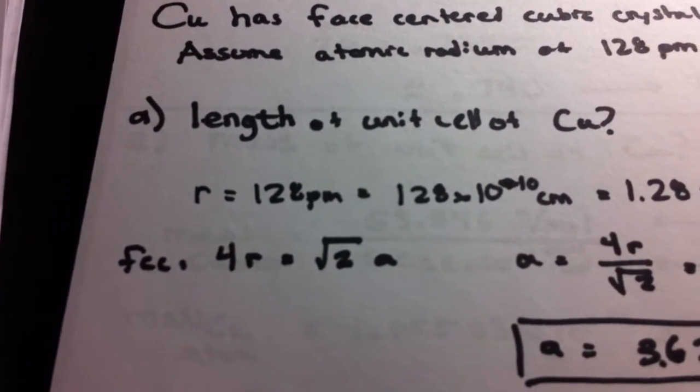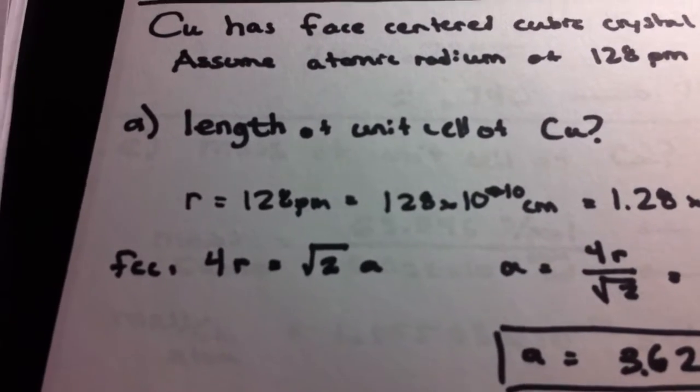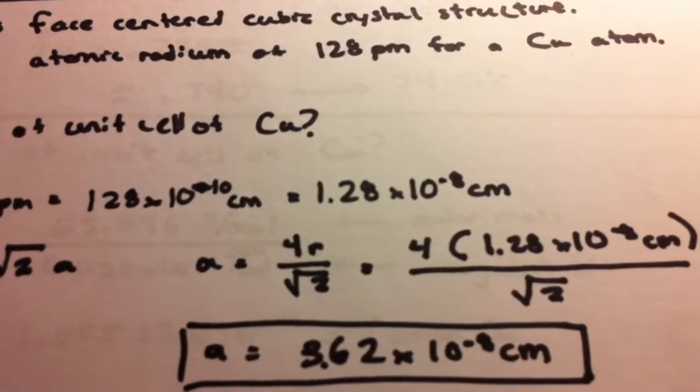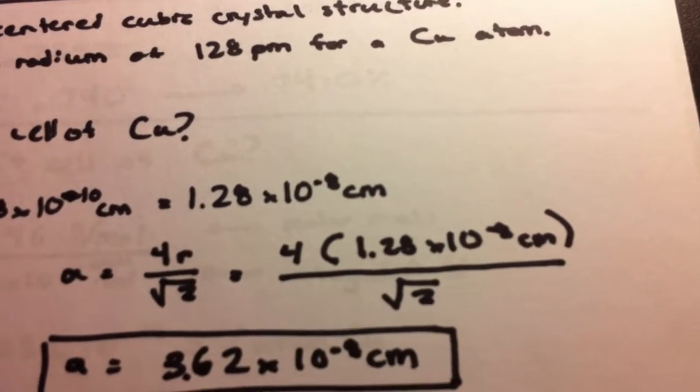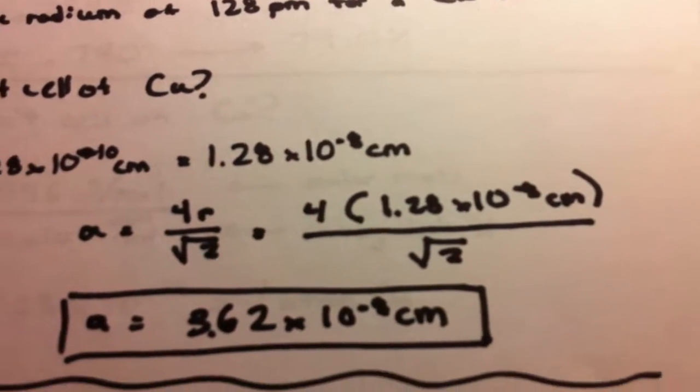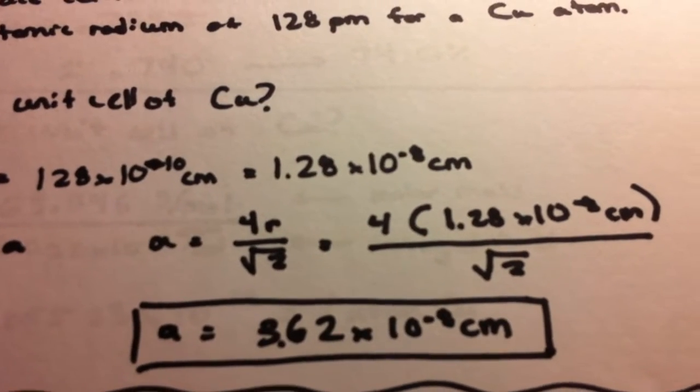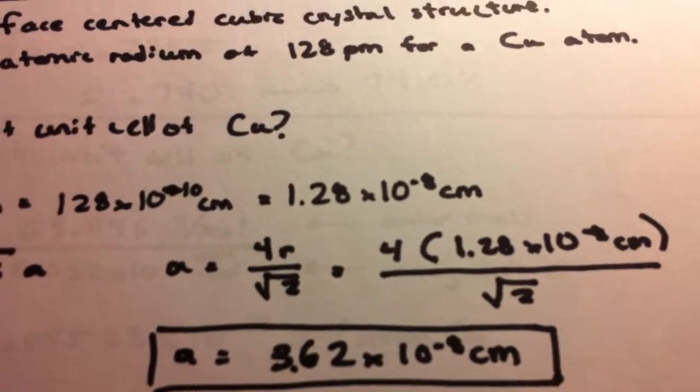With the face centered, we're going to have 4r equals radical 2a. And with some algebra, we can find out a by switching the variables around. And we're given r. 4 is given and radical 2 is given. So plug and chug. A equals 3.62 times 10 to the negative eighth power centimeters.